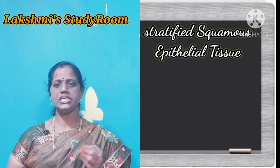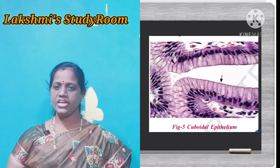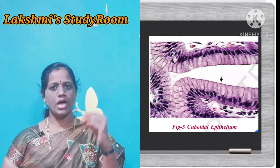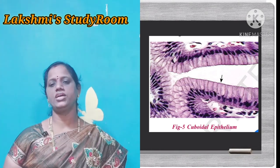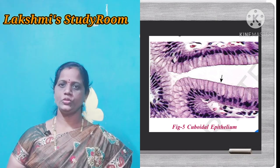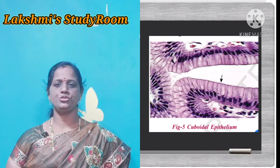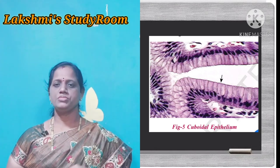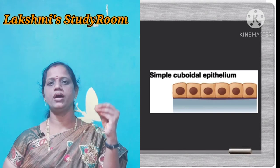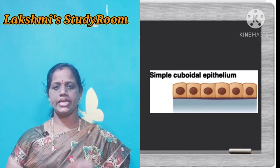The next one is cuboidal epithelial tissue. Cuboidal epithelial tissue forms a lining of many organs, tubules or blood vessels. The main function of cuboidal tissue is that it gives mechanical support to the organs.